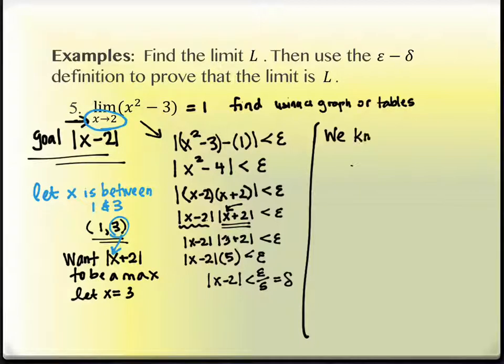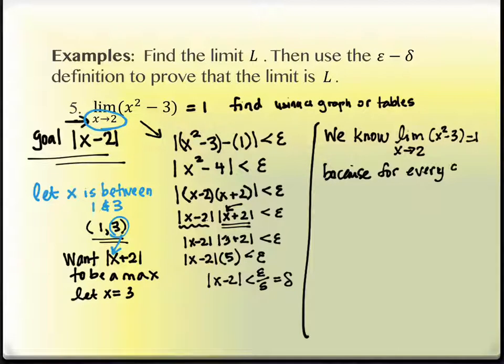So we know that the limit as x approaches two of x squared minus three is equal to one. And we know that because for every epsilon, there exists a delta, and the delta in this case is equal to epsilon over five.